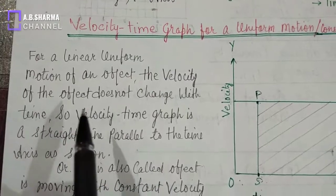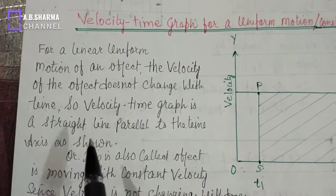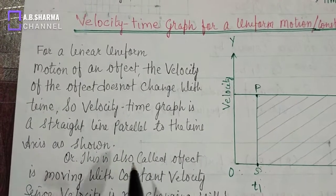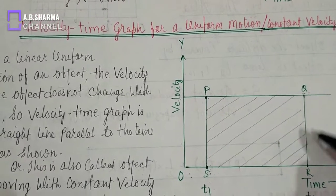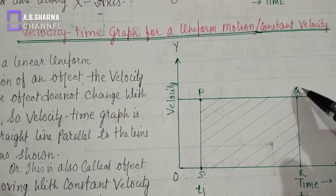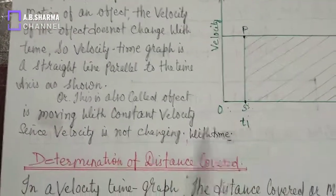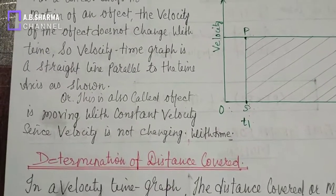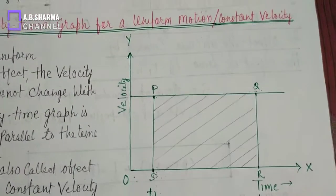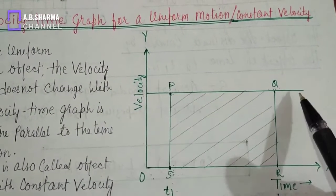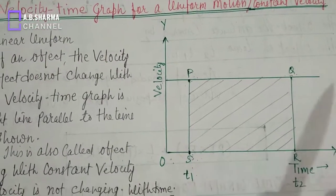For a linear uniform motion of an object, the velocity of the object does not change with time. So the velocity time graph is a straight line parallel to the time axis, as shown in the figure. This is also called the graph of constant velocity, since velocity is not changing with time.